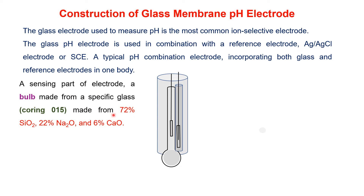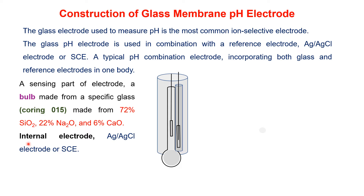The most important part of the glass membrane electrode is the bulb, which is sensitive to specific ions. It is composed of Corning 015 glass for pH measurement, with composition 72% silica, 22% sodium oxide, and 6% calcium oxide. The second part is the internal electrode, which is a silver-silver chloride electrode or saturated calomel electrode inside the glass electrode.